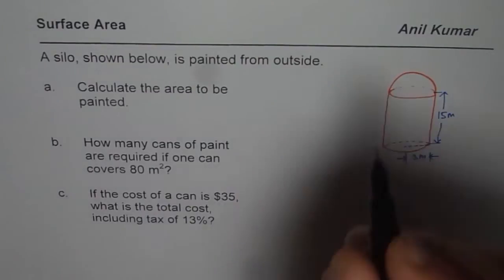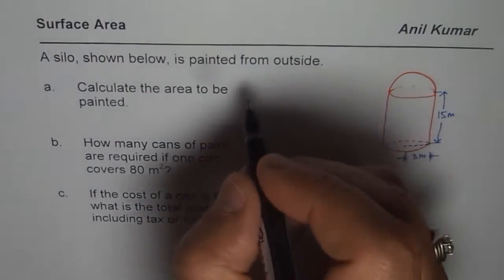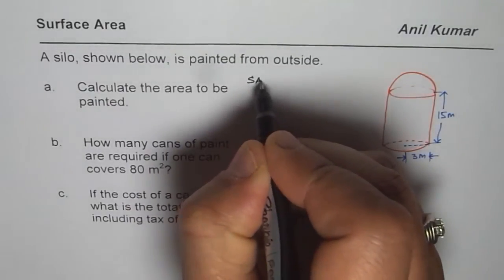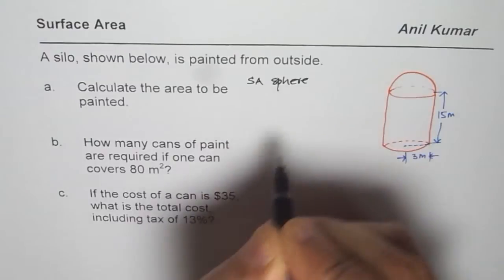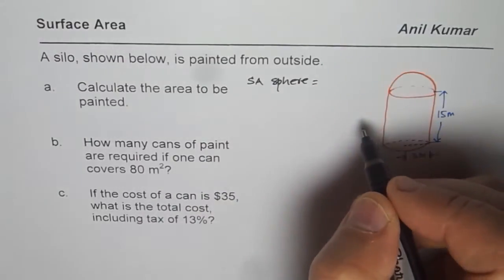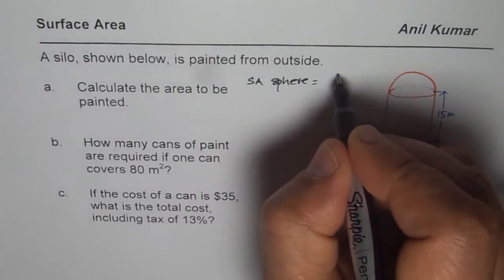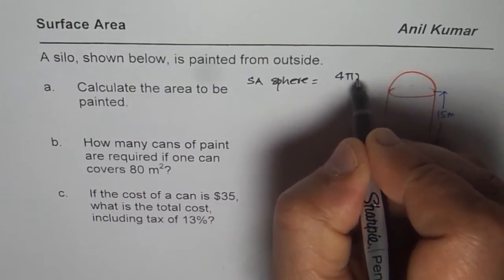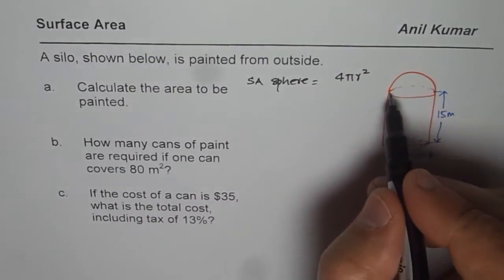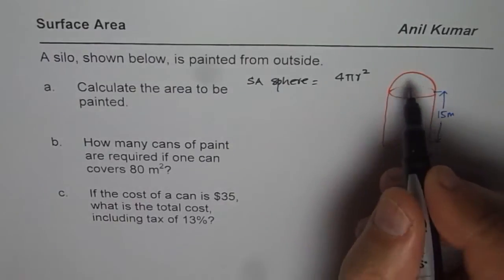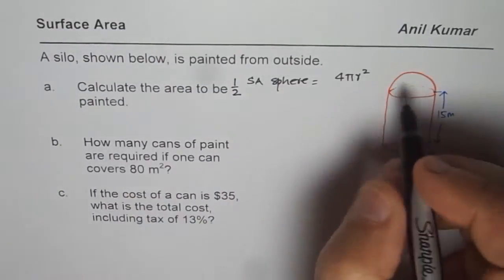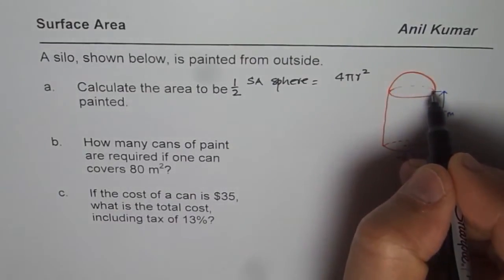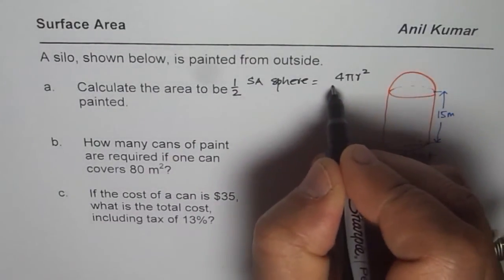Let's write down the formula. Surface area for a sphere is 4πr². But we are only considering half of it, so in this particular case we are doing half, so it will be half of 4πr².